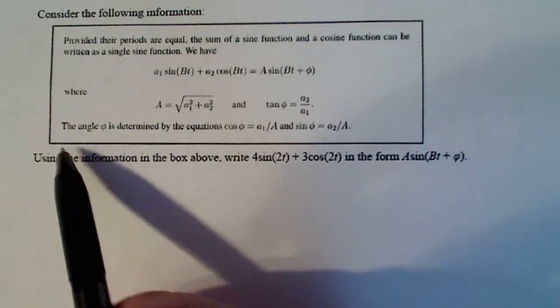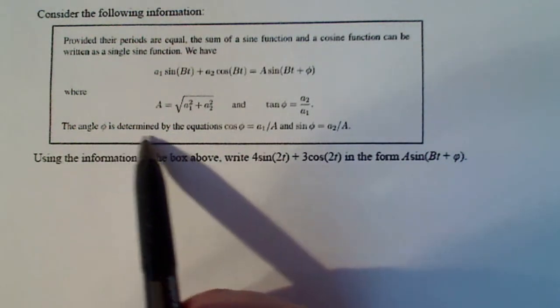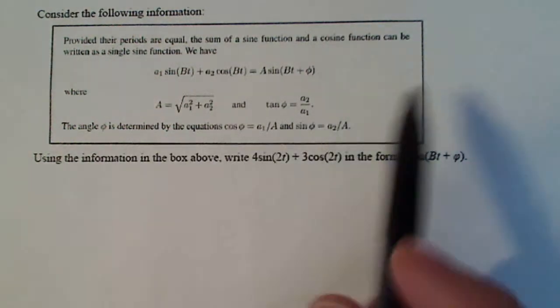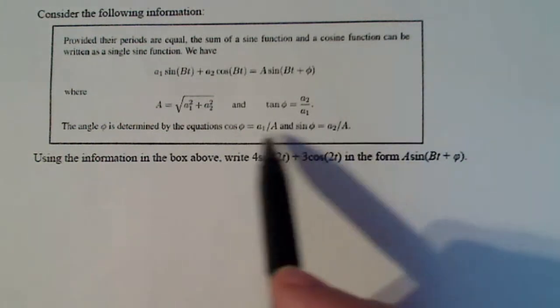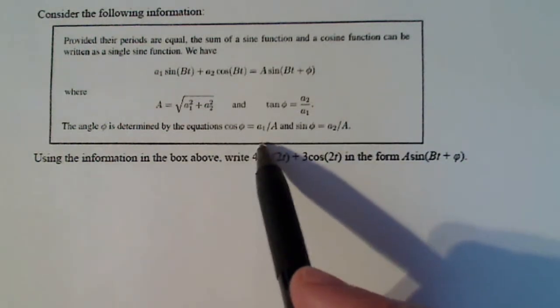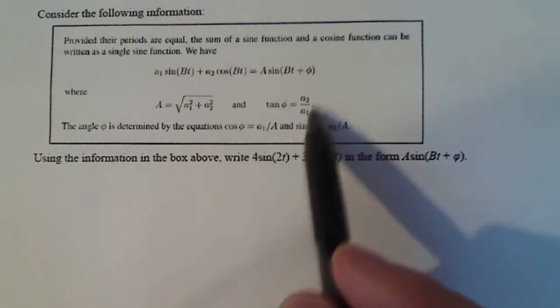So it's pretty straightforward here. Now, the angle phi is determined by the equations. So this is pretty much telling you its placement as well, like what quadrant you're in.